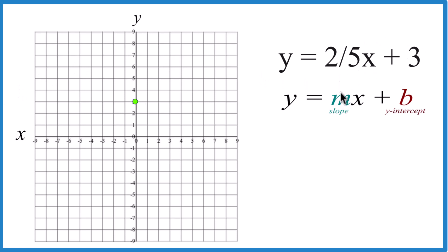For the slope, we have m, that's two-fifths x, so two-fifths, we're going to go rise over run.